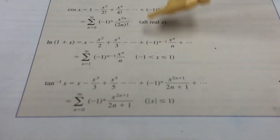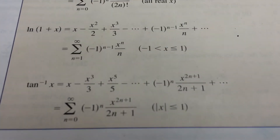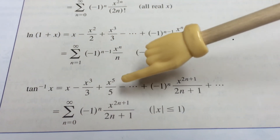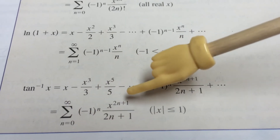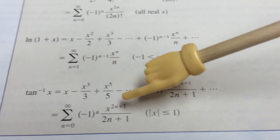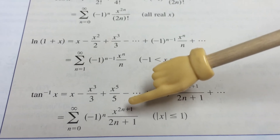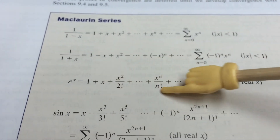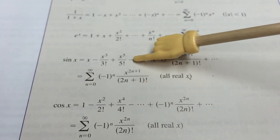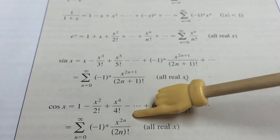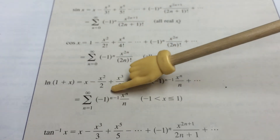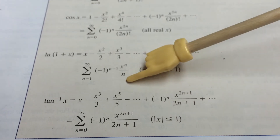Arctangent is separate: it's x, then x cubed over 3, x to the fifth over 5 — and again, no factorials. What I notice is that the ones with factorials we call PET: P for polynomial, E for the e function, and T for trig functions. Those are the only ones with factorials. The others — ln, arctangent — do not have factorials.